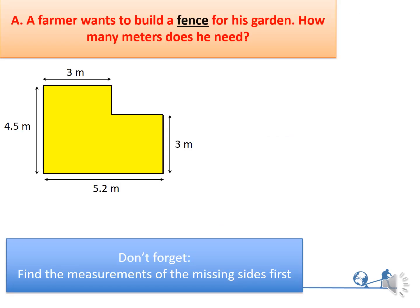If we have to solve this exercise, and it says the farmer wants to build a fence for his garden, how many meters does he need? When he asks you about a fence, it means a perimeter, because a fence is surrounding the whole garden. So what we have to do is to add all the sides of the figure.